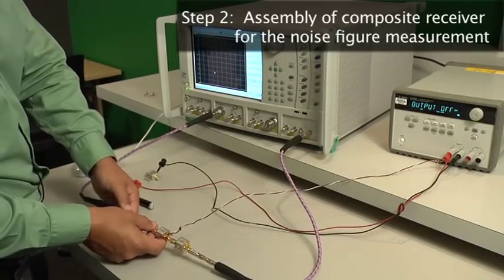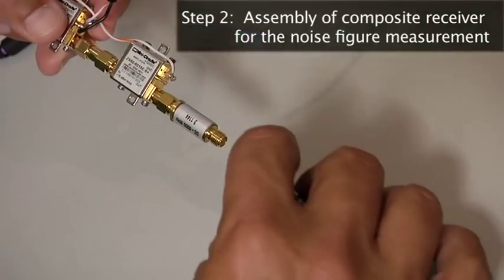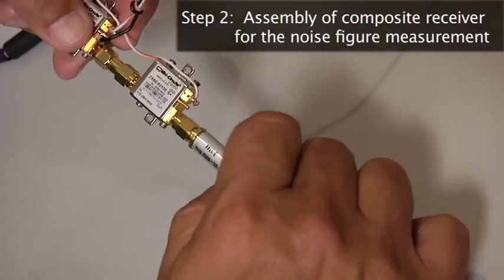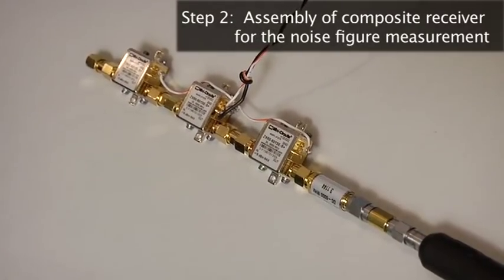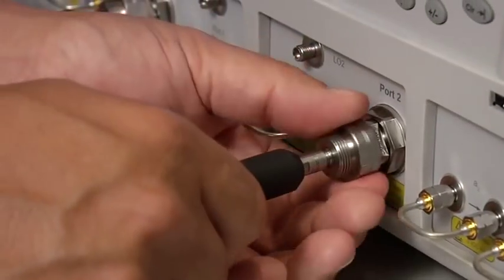Step two is assembly of a composite receiver for the noise figure measurement. There are two key elements for constructing the composite receiver. First, target a gain for the composite receiver that will ensure the DUT and pre-amp noise power is much larger than that of the VNA itself. Usually, a gain of about 40 dB will be sufficient.